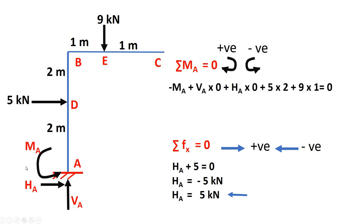We have minus MA because it is itself a moment acting in the anti-clockwise direction. VA into zero and HA into zero, because both pass through point A and so have no moment arm. Five into two is clockwise, so positive. Nine into one — perpendicular distance is 1 — and the moment is clockwise, so also positive. Setting the sum equal to zero gives moment MA equal to 19 kN·m.